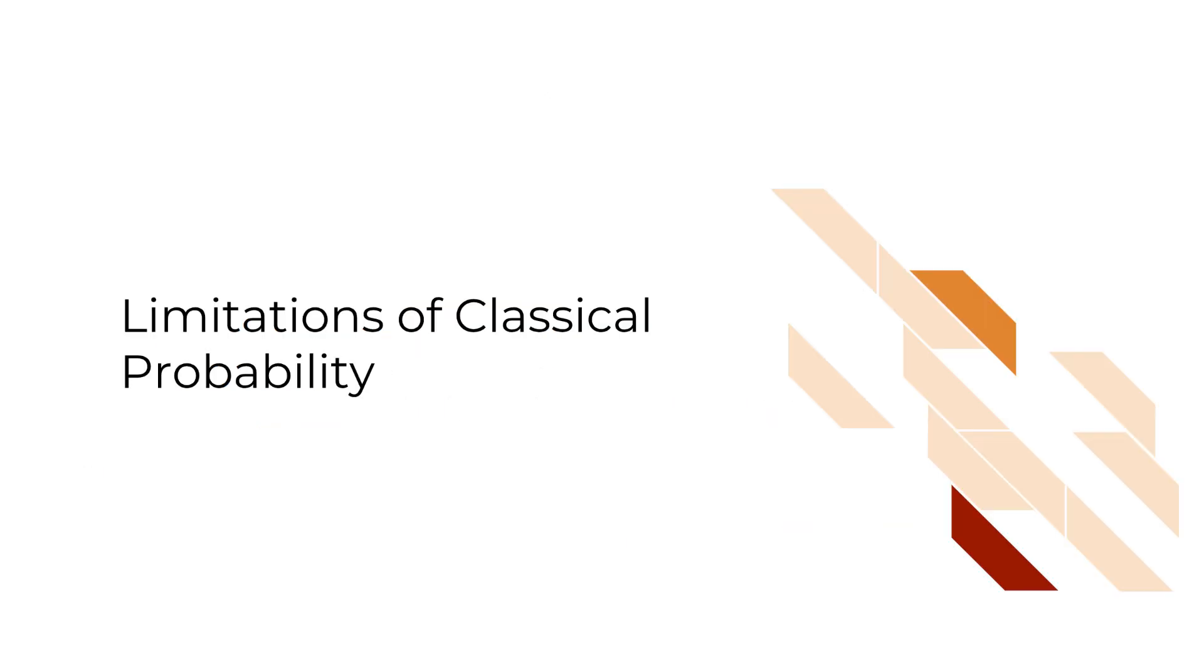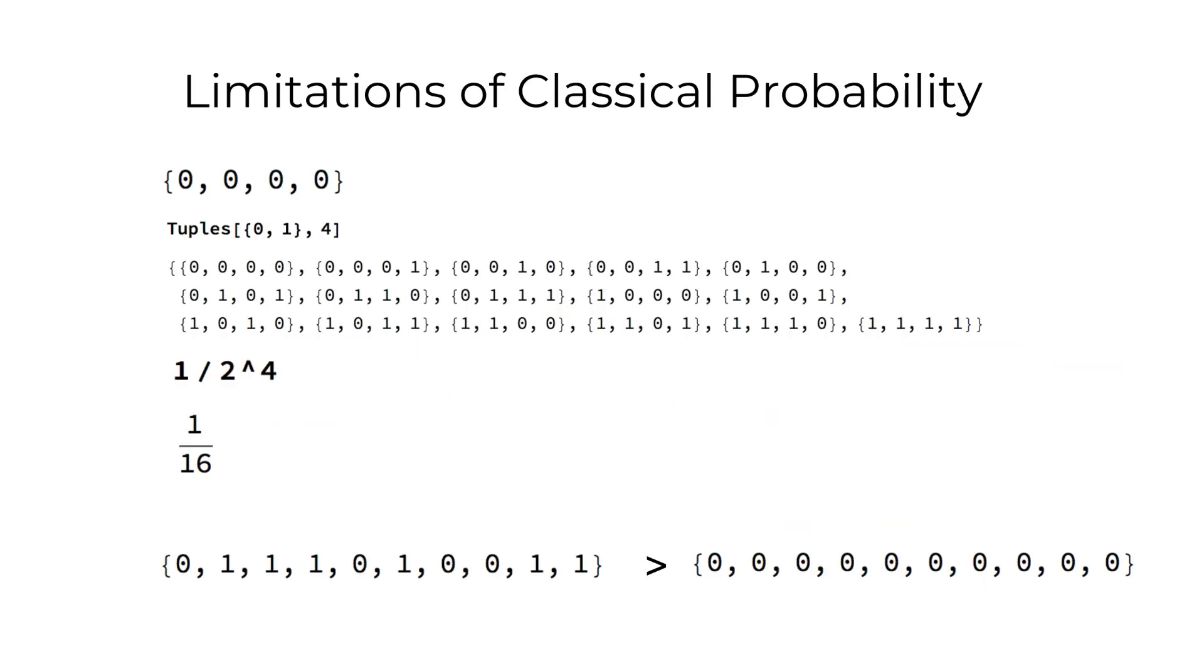the sequence of 4 zeros, like this one, has exactly the same probability of occurring as any other sequence of length 4. Because according to probability theory, each has a probability of 1 over n, with n the number of elements in the set.